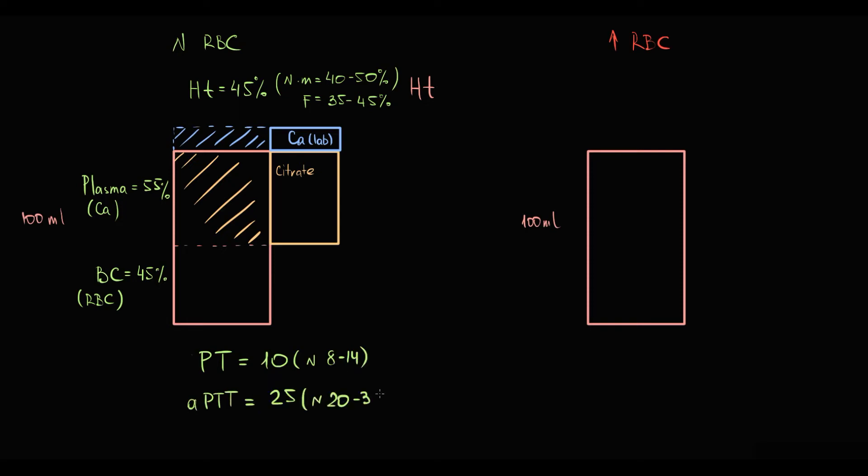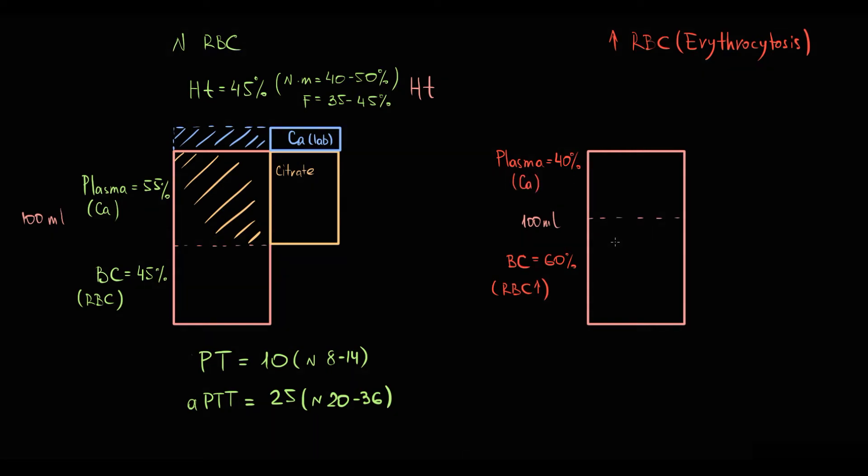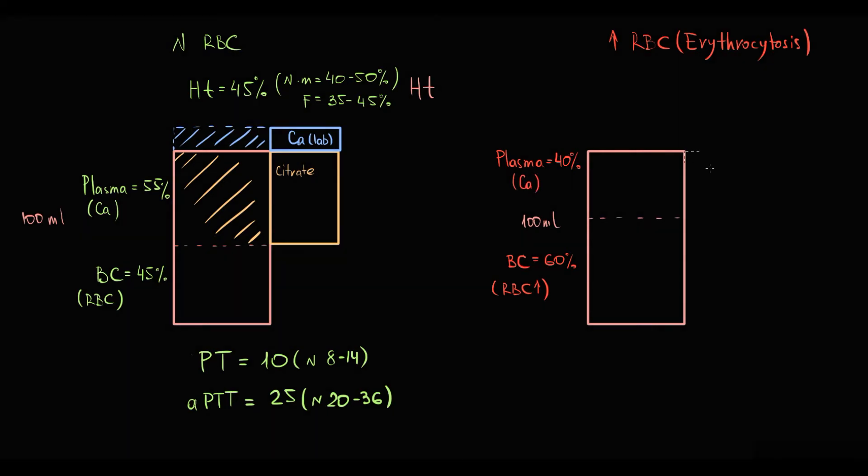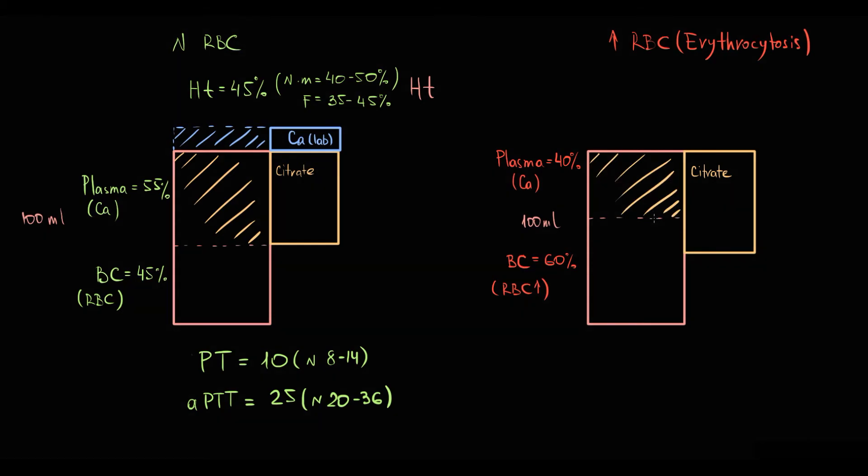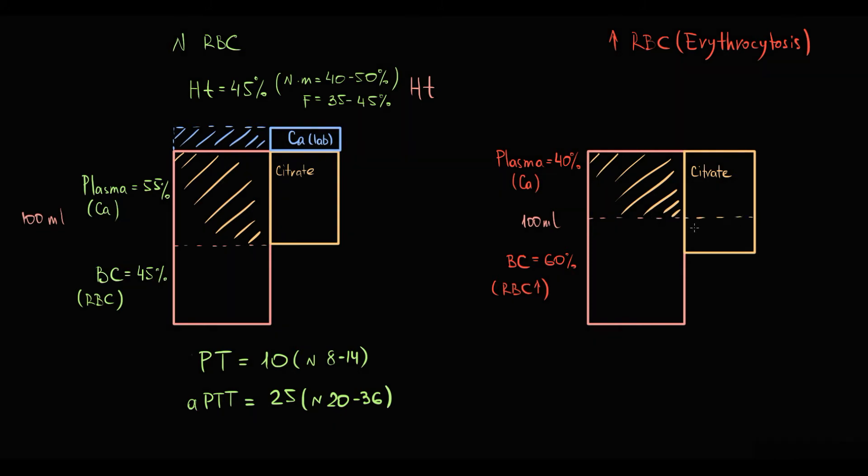But in case of severe erythrocytosis, the proportion of blood cells to plasma will be 60 to 40. Thereby plasma volume compartment will be 40 ml. But routinely we add the standard volume of citrate to bind plasma calcium. When we add the standard volume of citrate to 40 ml of plasma instead of normal 55, it will be too much. Yes, citrate will bind all plasma calcium, but also there will be too much free citrate left.